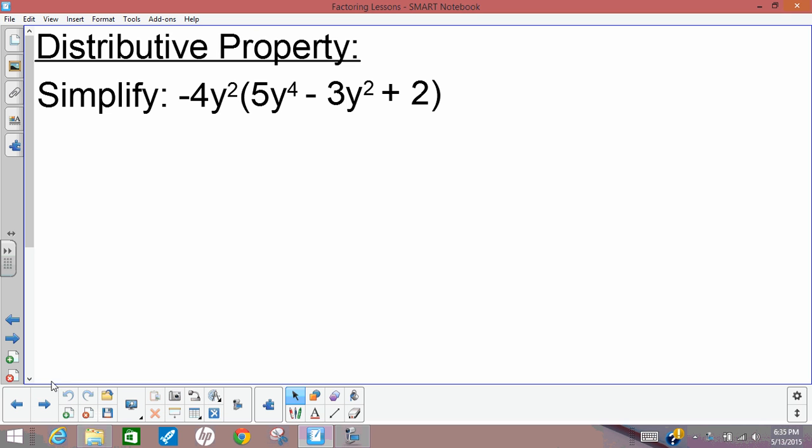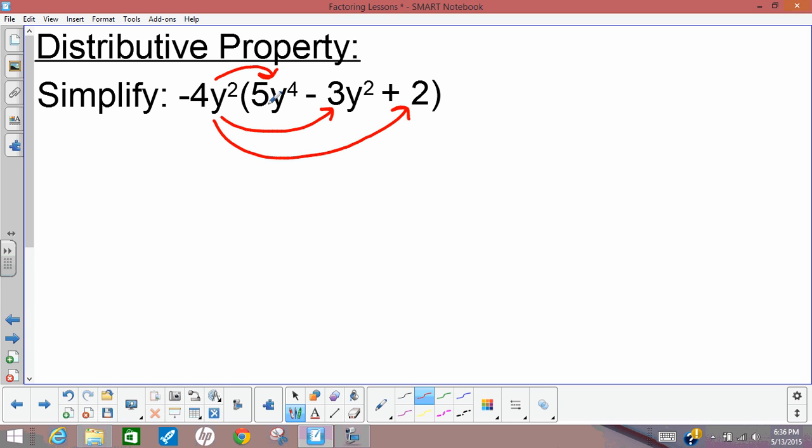So we'll start here with just a refresher of the distributive property, something we've used a little bit this year but probably not as much as we would have liked to if we want to be ready for next year. So I have here a one-term polynomial, which actually we would call a monomial because it has one term, and I'm multiplying it by this three-term polynomial. And this is an example of the distributive property because I'm going to multiply this negative 4y squared by every term inside the parentheses. So each piece of this polynomial gets multiplied by negative 4y squared.